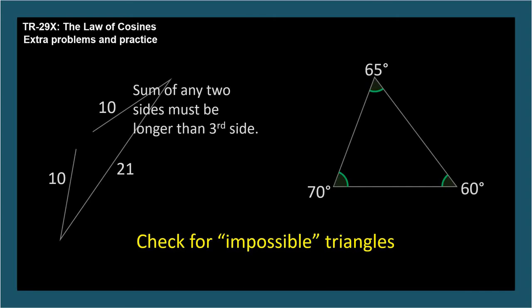Sometimes instructors like to throw in a problem like this. If you don't notice that the triangle is impossible, you'd start solving the problem with the law of cosines and you'll end up having to take the arc cosine of a number greater than 1 or less than negative 1, which is undefined. This will be your clue to take a closer look.